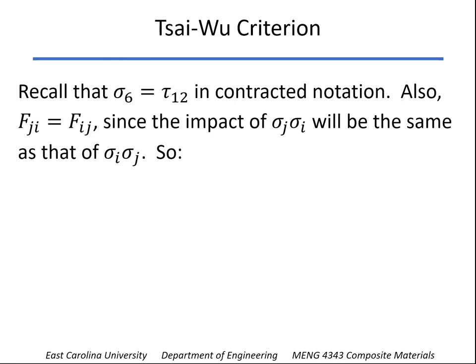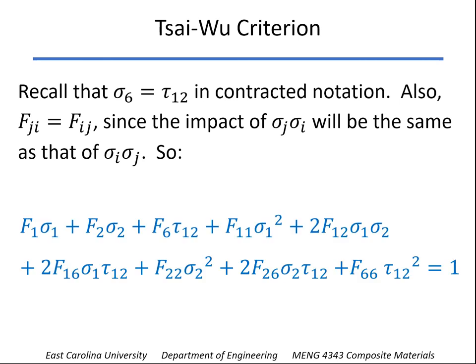Remember that sigma6 equals tau12. Also, the strength terms F_ji and F_ij must equal each other because the combined effect of two stresses doesn't depend on the order, so we can reduce the number of terms slightly. We're going to figure out what those strength terms are in the next video, and then we'll be able to work some problems with failure prediction.